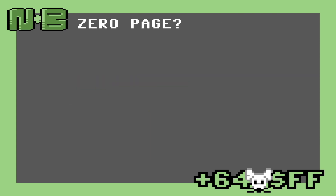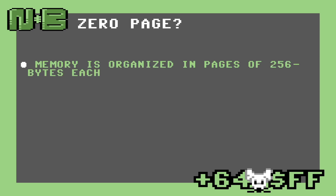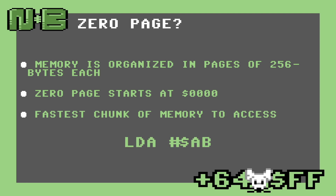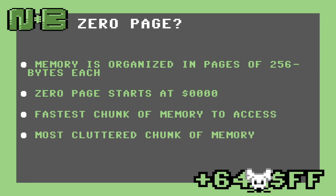Now that we've covered all the registers, what's this zero page all about? To the 8502, memory is organized in pages of 256 bytes each. The zero page is just the first page in memory that starts at address zero. The 8502 has an addressing mode specifically to make accessing this memory fast. Instead of using two bytes to refer to the absolute address, we instead use a single byte and the leading zeros are inferred, which saves an additional CPU cycle. Unfortunately, because it's so fast to access, this page is also the most used by code in ROM, and using it for our own programs is tricky.